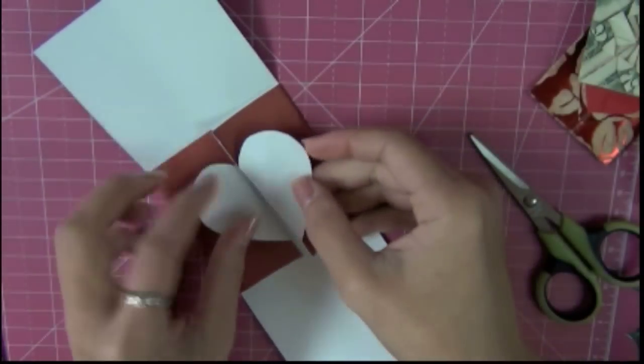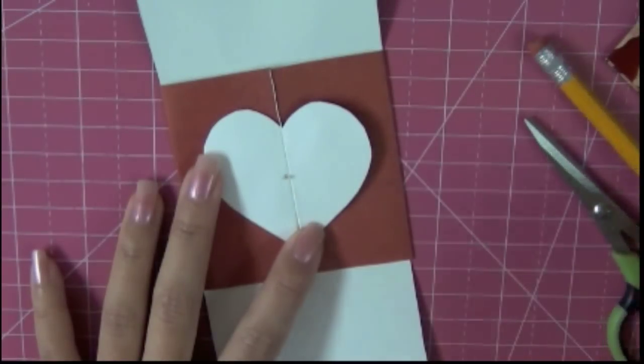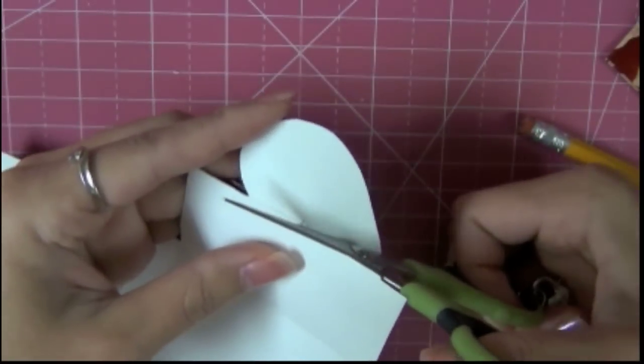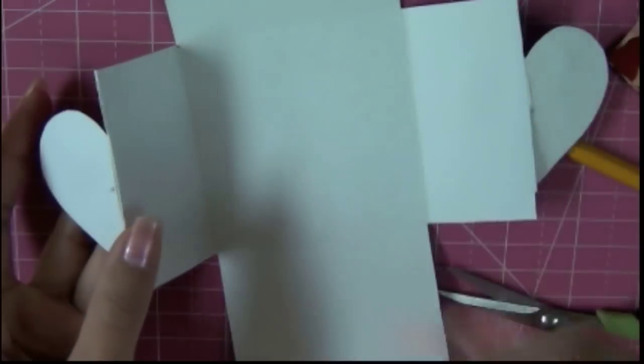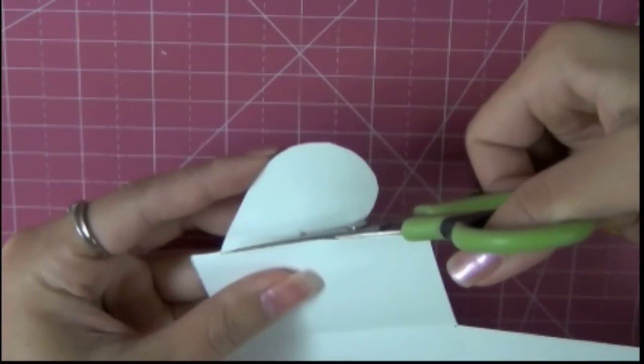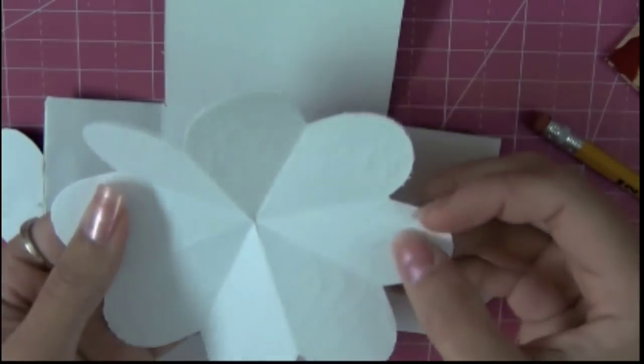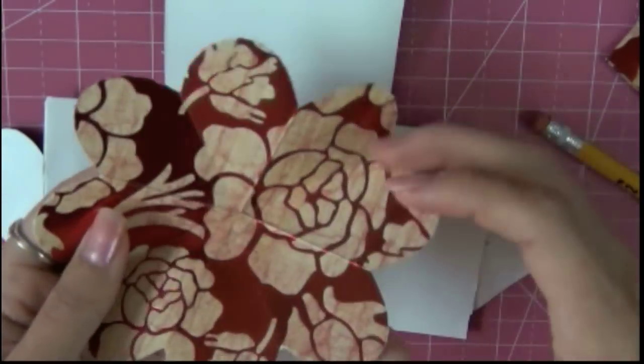Now the glue should be dry, we're going to pull the heart together. Take a pen or pencil, mark at the center. Cut a little bit past the marking point. On the opposite side, instead of cutting from the bottom, we're going to cut from the top. Remember to cut a little bit past the marking point. Inverse the heart so that when you open the card, you can see the pretty pattern inside.